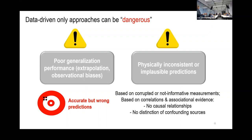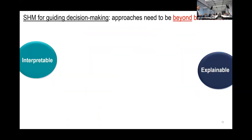Why can these problems happen? Data may be based on corrupted or non-informative measurements — a sensor might fail and you're still collecting data, but that's not informative. The causal relationship and distinction of compounding sources are not captured. Machine learning is great, but can give very accurate and completely wrong predictions. So what we want to do is constrain with physics to move away from implausible results. We want to take decisions, so we need approaches that go beyond black boxes and are interpretable and explainable.